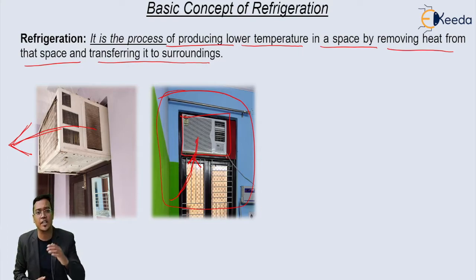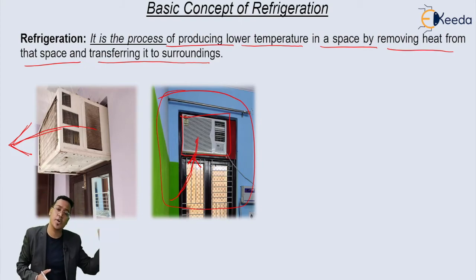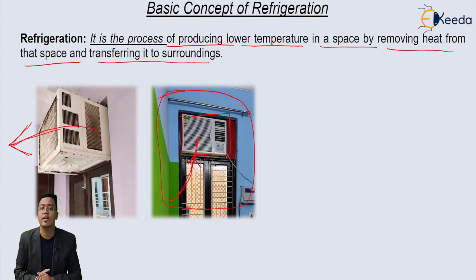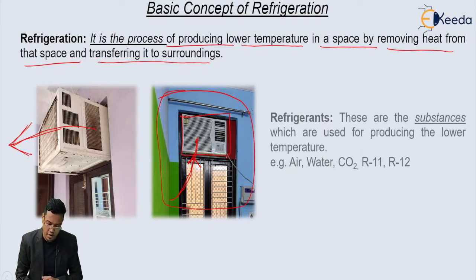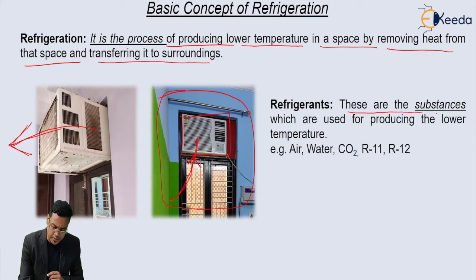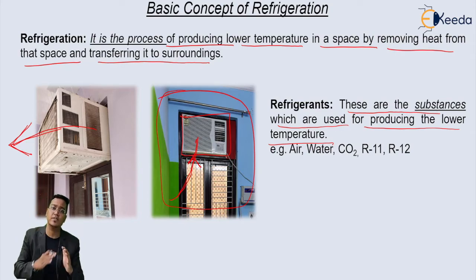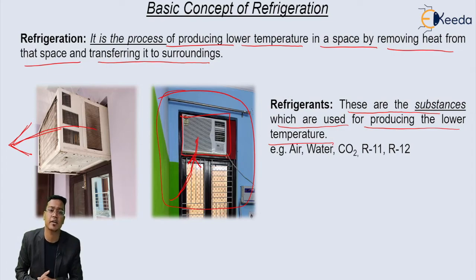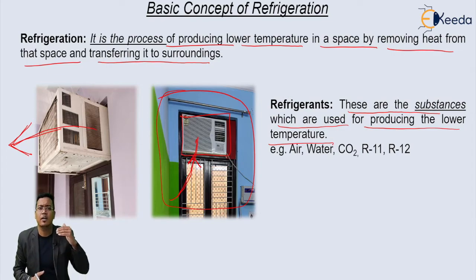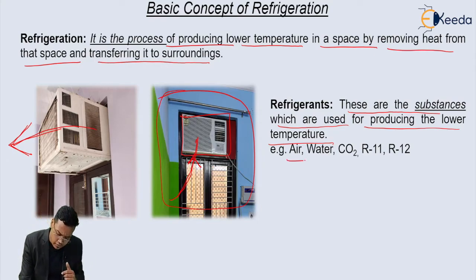The window AC transfers heat from the room to the surrounding with the help of a substance. That substance is called a refrigerant. Refrigerants are the substances which are used for producing low temperature. In a refrigeration system, the working fluid is the refrigerant. Refrigerants are of different types, like air, water, CO2, R11, and R12.